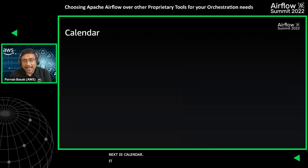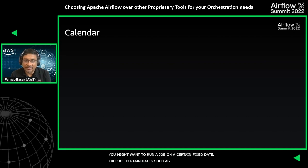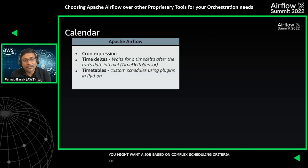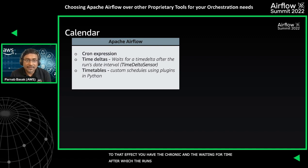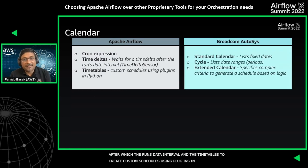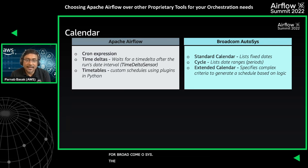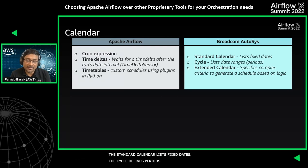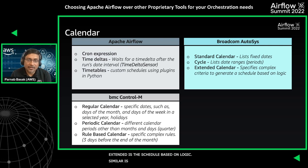Next, let's look at calendars, which help you schedule jobs on fixed dates, exclude holidays, or define complex scheduling criteria. Apache Airflow gives you cron expressions, time deltas using the TimeDeltaSensor, and Airflow Timetables, which let you create custom schedules using Python plugins. For Broadcom Autosys, there are three types of calendars: a Standard Calendar for listing fixed dates, a Cyclic Calendar for defining periods, and an Extended Calendar for specifying complex criteria to generate a schedule based on logic.